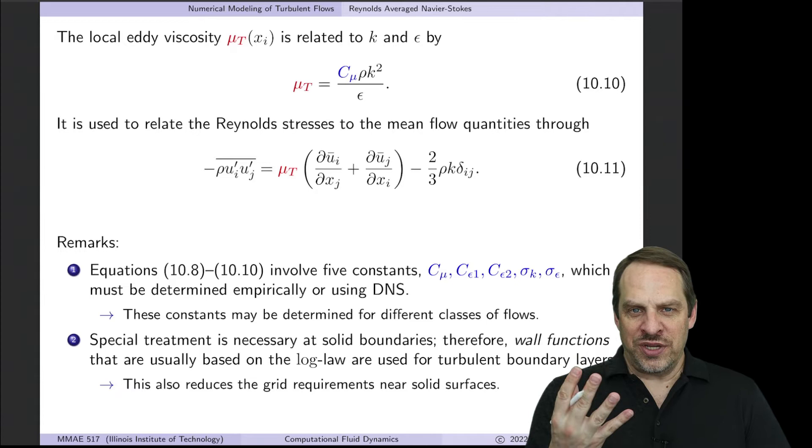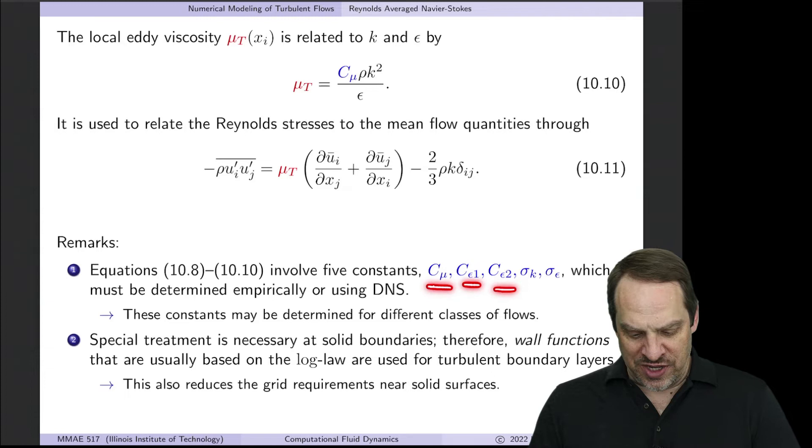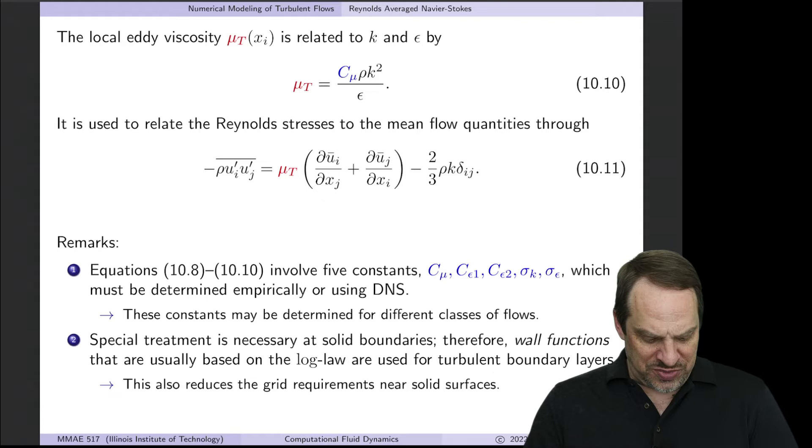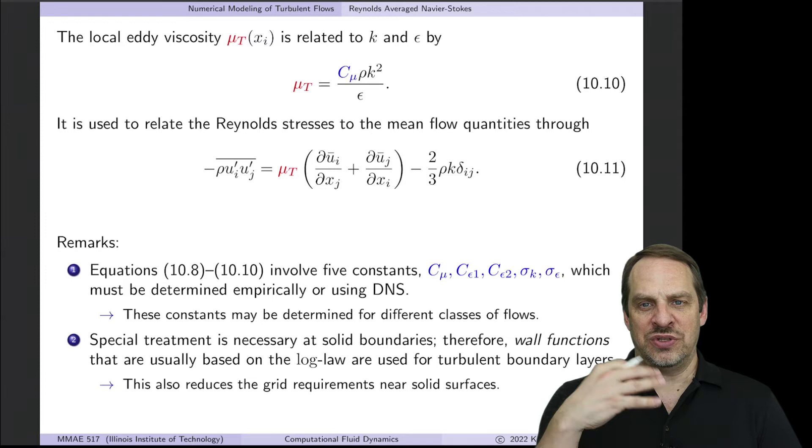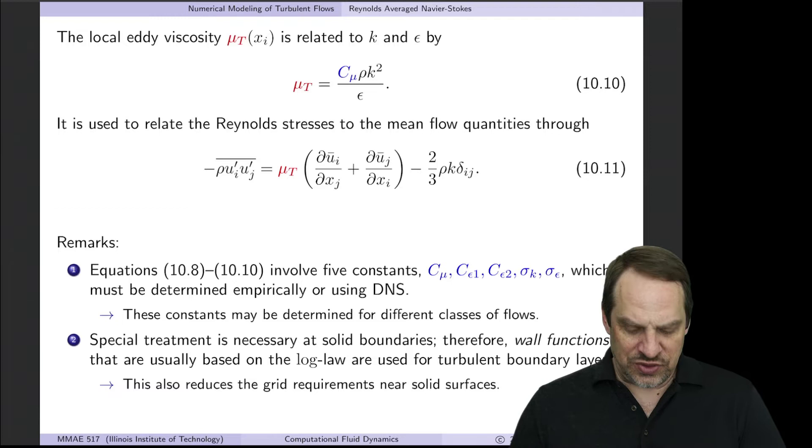Although we've solved the closure problem, now we have five constants that we need to determine for particular classes of flows. In general, they could be obtained empirically by running experiments and processing the data, or you could use DNS. DNS is a numerical simulation that provides all the details about turbulence, so we can use that information to determine the constants for this turbulence model.